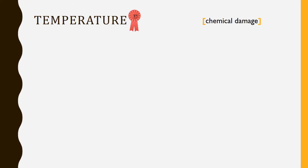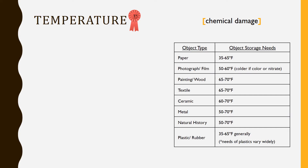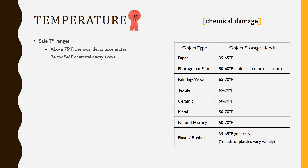Let's explore temperature some more. Here we have various object types with their very general preferences. It is important to know these to ensure that whatever object types are in the collection are in the best possible environment. These are considered safe temperature ranges. Once the temperature exceeds 75 degrees, chemical decay accelerates, and below 54 degrees, chemical decay slows. The rate of reaction for this decay or deterioration doubles with each temperature increase of 18 degrees.